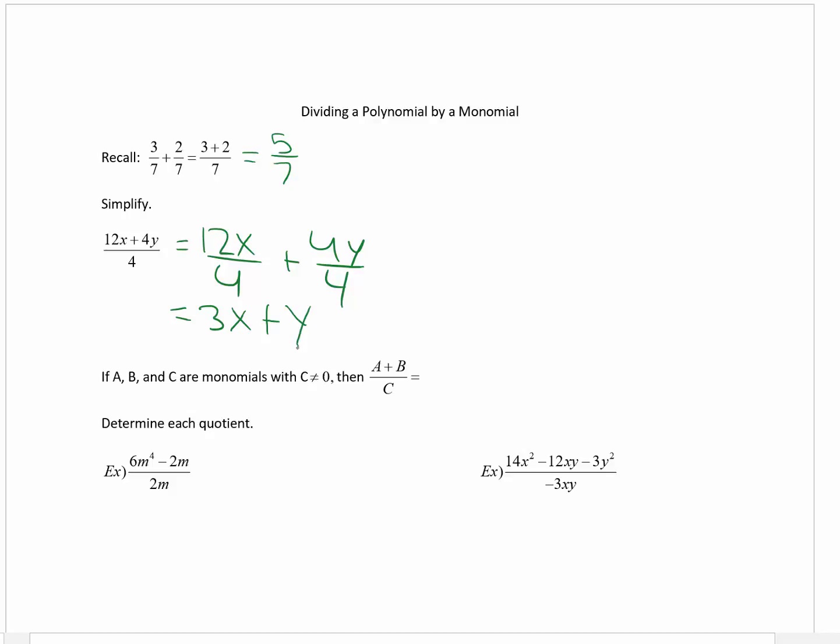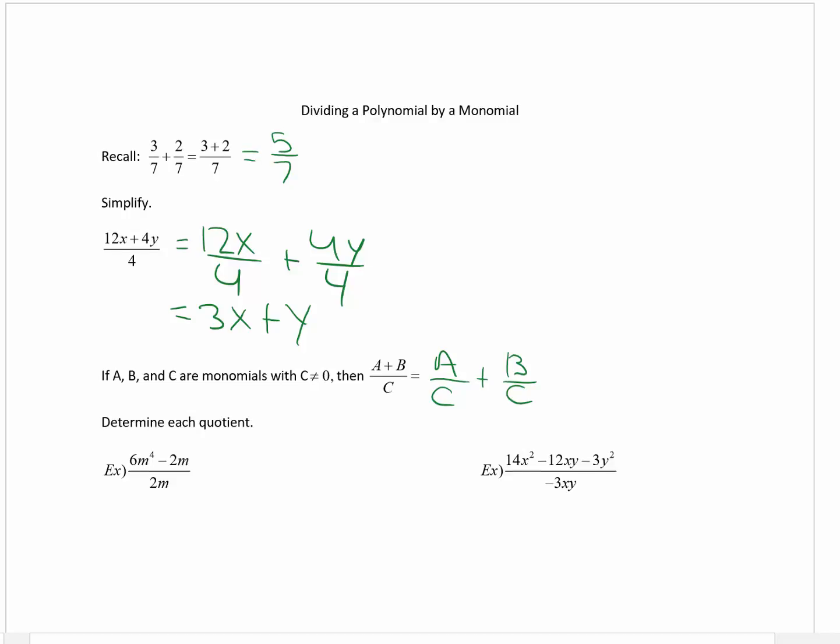So in general then, if A, B, and C are monomials and C does not equal zero, then A plus B divided by C is the same thing as A divided by C plus B divided by C.